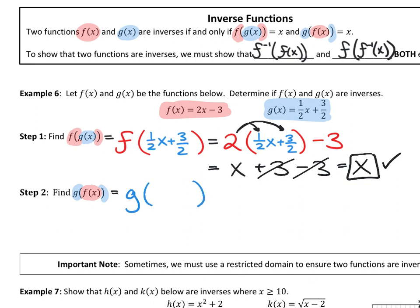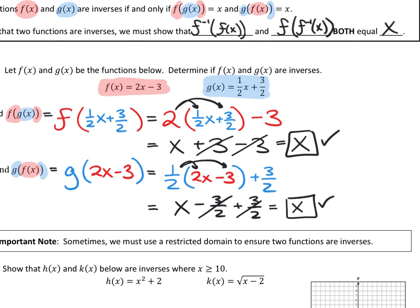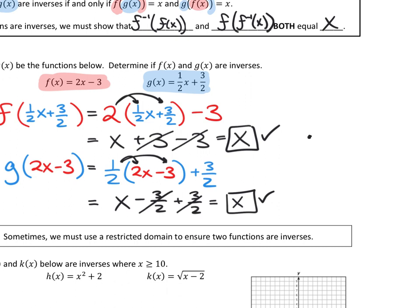Now compose it the other way: g of f of x, with g on the outside and f on the inside. f of x is 2x minus 3. G is one-half times something plus three-over-two, where that something is 2x minus 3. One-half times 2x is x. One-half times negative 3 is negative three-halves. Adding three-halves: negative three-halves and positive three-halves cancel, leaving just x. Since we got x from both compositions — both directions — we conclude: therefore, f of x and g of x are inverses.